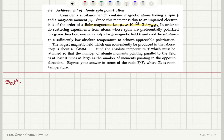So this is cooling in field — cool the substance in a large magnetic field. The largest magnetic field which can conveniently be produced in the laboratory is about 5 tesla. Find the absolute temperature T which must be attained so that the number of atomic moments pointing parallel to the field is at least 3 times those pointing in the opposite direction. Express your answer in terms of T over T_R.